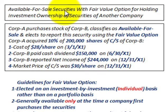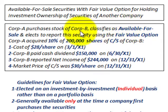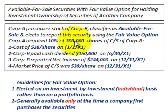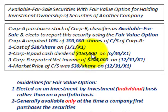We're going to be going over available-for-sale securities with the fair value option for holding an investment ownership of securities of another company. Corporation A purchases the stock of Corporation B, classifies it as available-for-sale, and elects to report this security using the fair value option. Corporation A acquires 10% of the 200,000 shares of common stock of Corporation B, paying $28 per share. Corporation B paid a cash dividend of $150,000 for the year and also reports net income of $244,000.